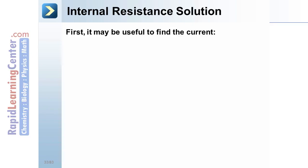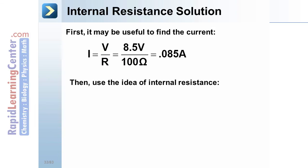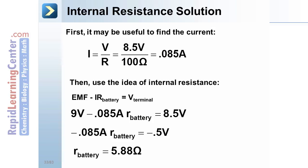Internal resistance solution. First, it may be useful to find the current. Here we can use Ohm's law, but rearranged for I. We get a current of 0.085 amps. This is the current flowing through our circuit, which means this is the current flowing through the battery also. Then, use our idea, or previous description, of internal resistance. Our EMF is 9 volts. We just calculated the current flowing through the battery, and we don't know the resistance of the battery. The terminal voltage was given as 8.5 volts. In this equation, we have one unknown, the R of the battery. Rearranged to solve for that, and we get an internal resistance of the battery of about 5.88 ohms.